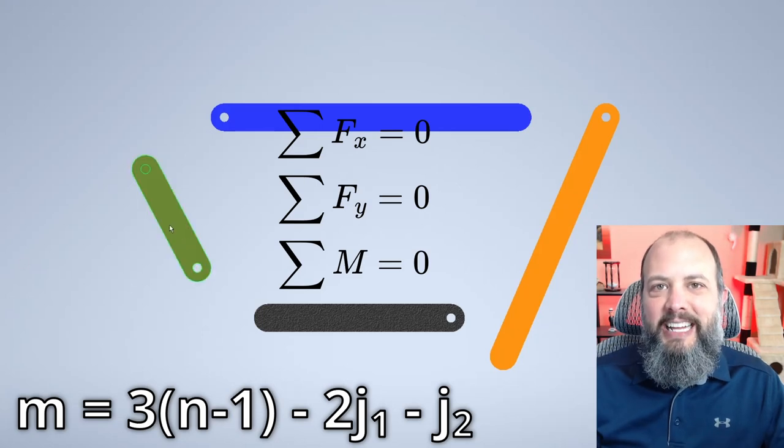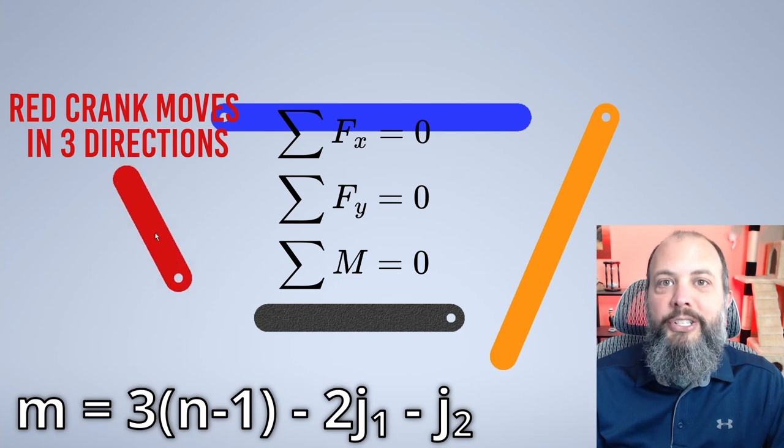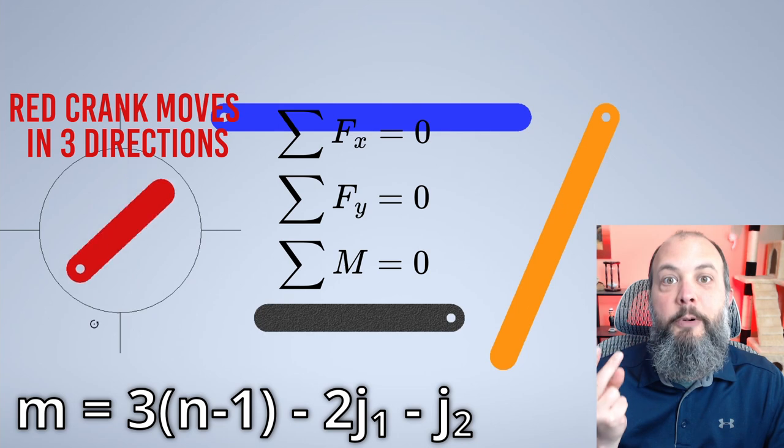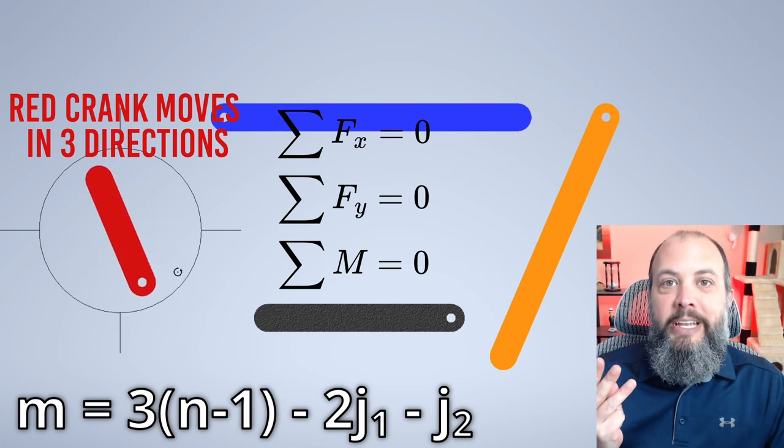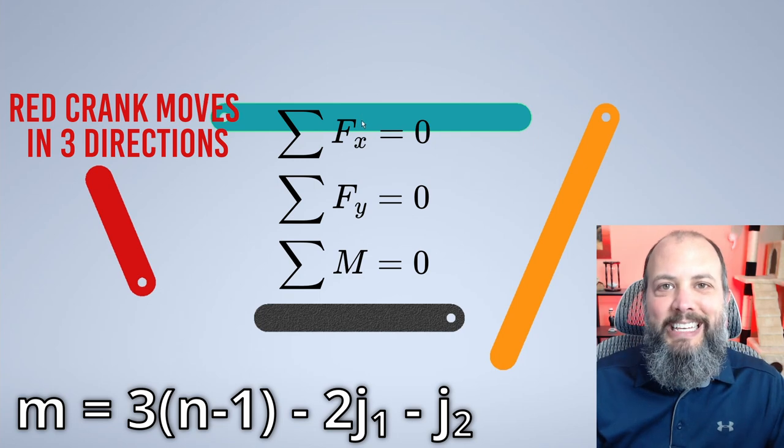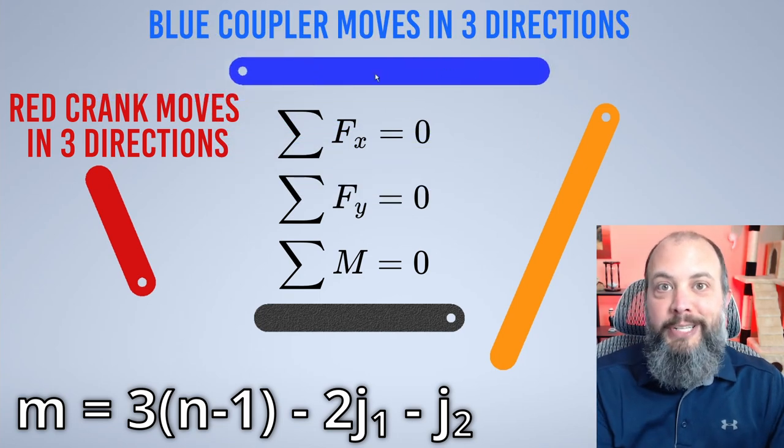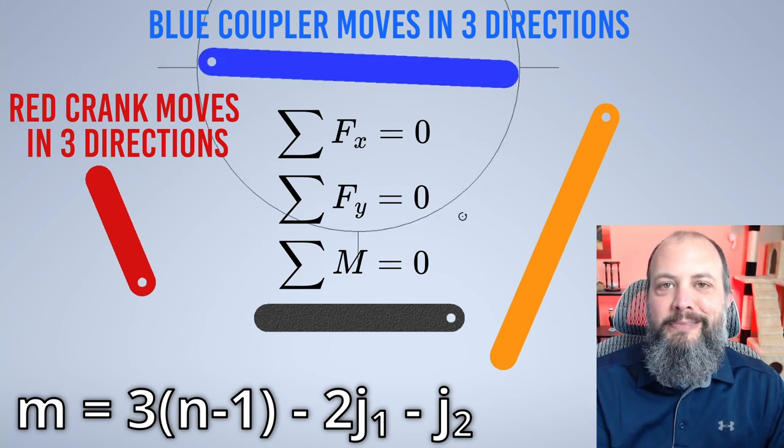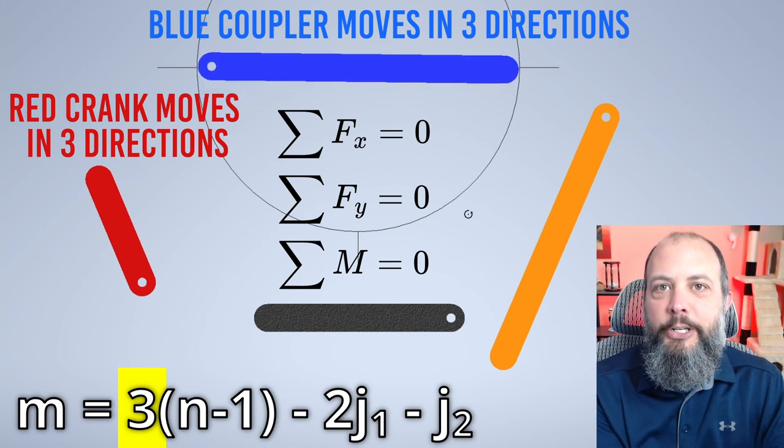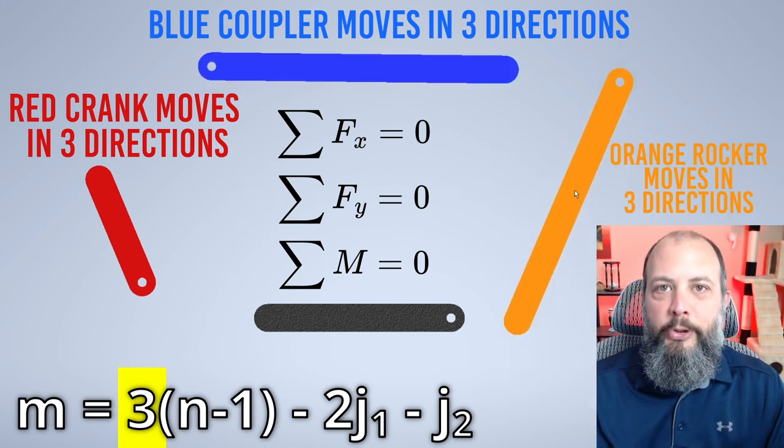I want you to think back to statics. You remember drawing free body diagrams and writing out the equations of equilibrium: sum of forces in the x direction, sum of forces in the y direction, and sum of moments about a point. For each free body, you have these three equations of static equilibrium, because a free body in 2D can move horizontally in the x direction, it can move vertically in the y direction, or it can rotate. That's the three at the front of this mobility equation. Each moving piece can move in each of these three directions.